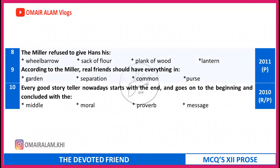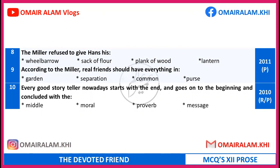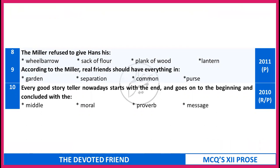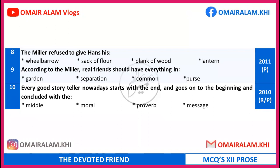Correct answers: The Miller refused to give Hans his wheelbarrow - answer is lantern. According to the Miller, real friends should have everything in common. 'Every good storyteller nowadays starts with the end and goes on to the beginning and concludes with the middle' - answer is moral. The correct answers: the Miller refused to give Hans his lantern. According to the Miller, real friends should have everything in common. Every good storyteller nowadays starts with the end and goes on to the beginning and concludes with the middle.